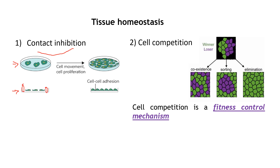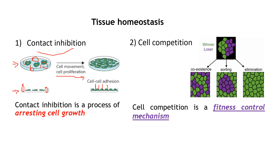There is space everywhere, so cells receive a signal and as they find more space they start moving and proliferating until there is no more space. Then they come into contact with each other and they stop proliferating and moving. In other words, contact inhibition is a process of arresting cell growth that occurs when cells come into contact with each other. This was studied in fibroblasts and is the subject of a key article.